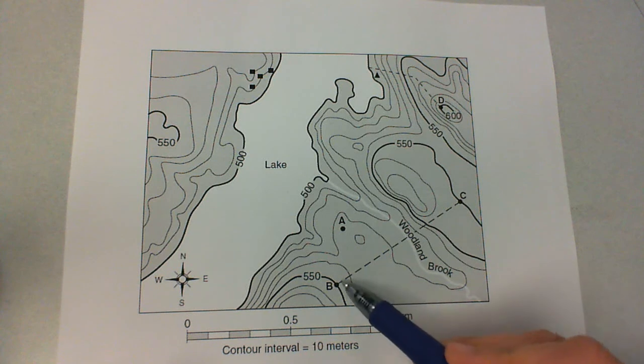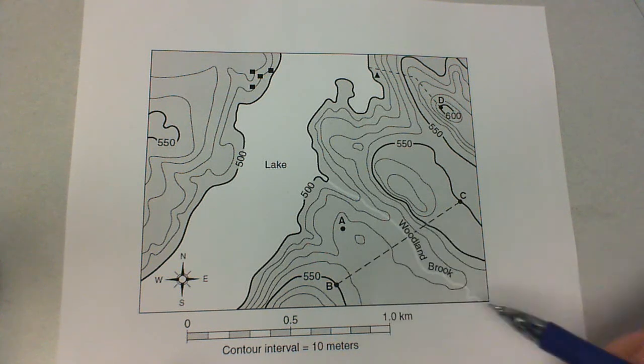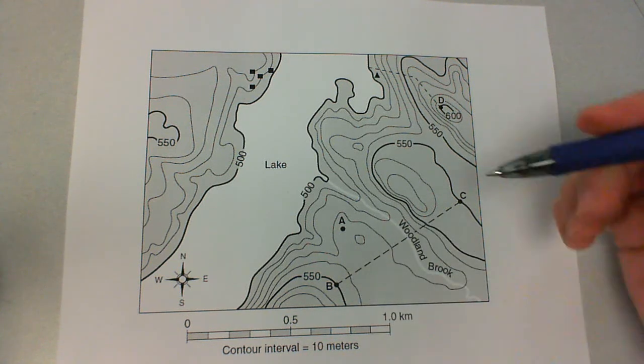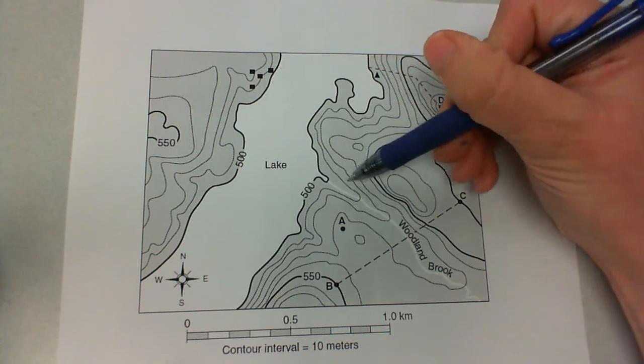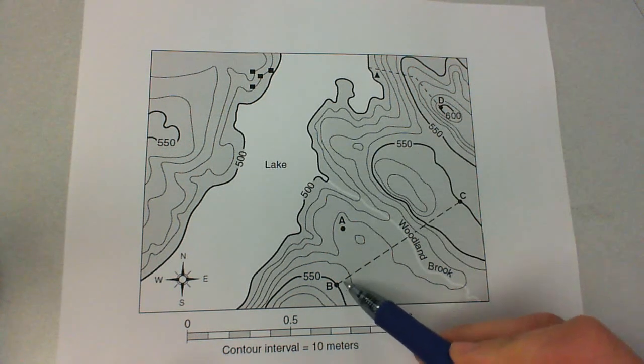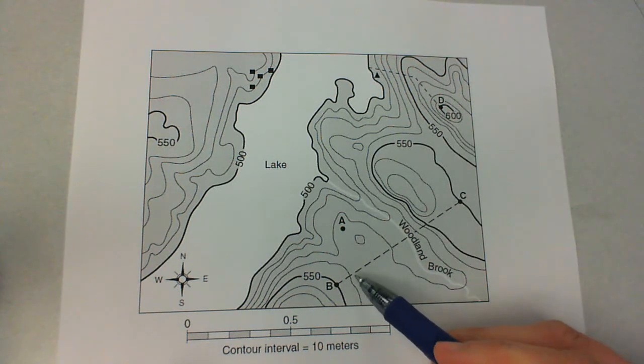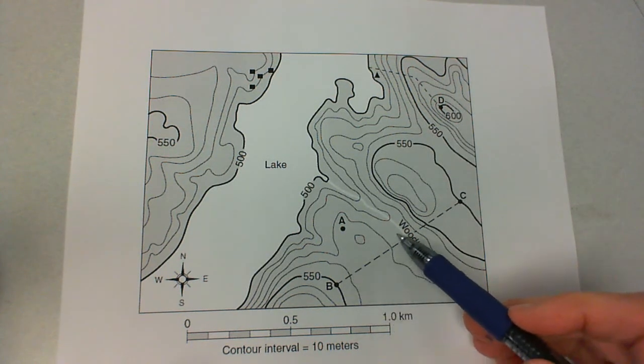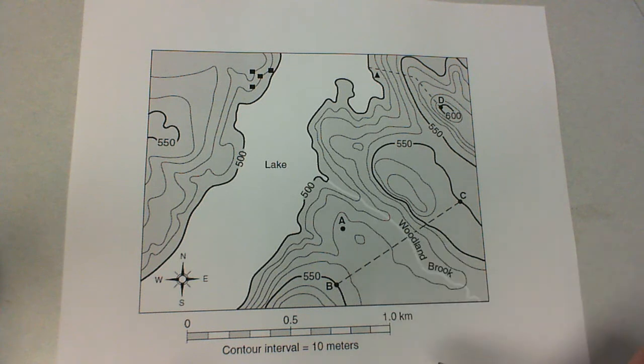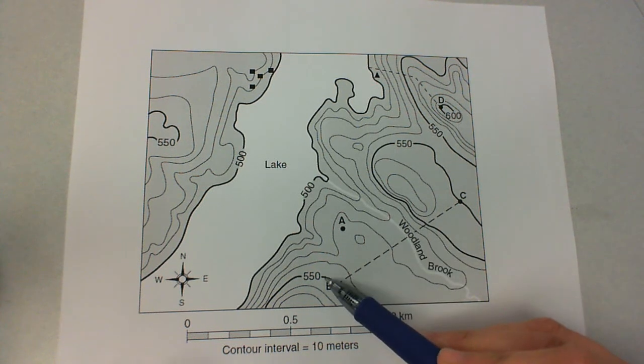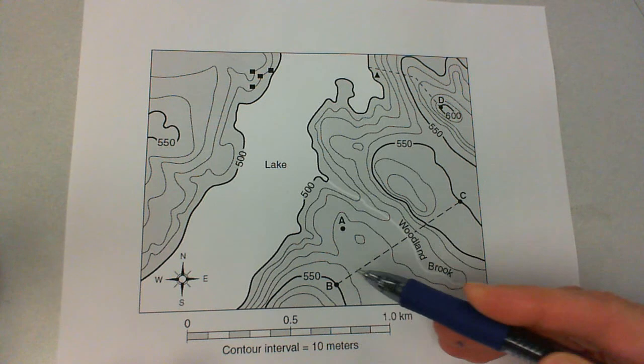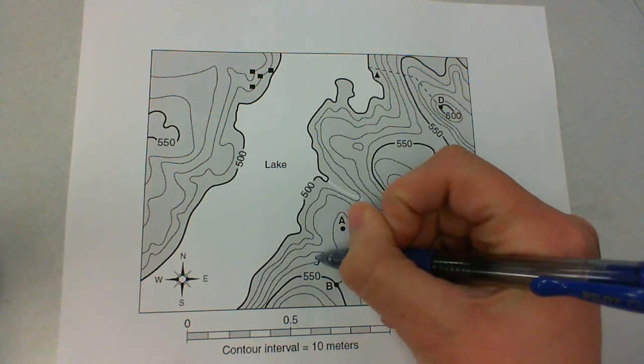We need to figure out if it's decreasing or increasing as we go across here. What we can see is there's a brook running right through the middle along line BC. So if there is water right here, that'll automatically tell us that we're decreasing in elevation as we get closer to that. So if this is 550 and our interval is 10 meters, this next line here would be 540.